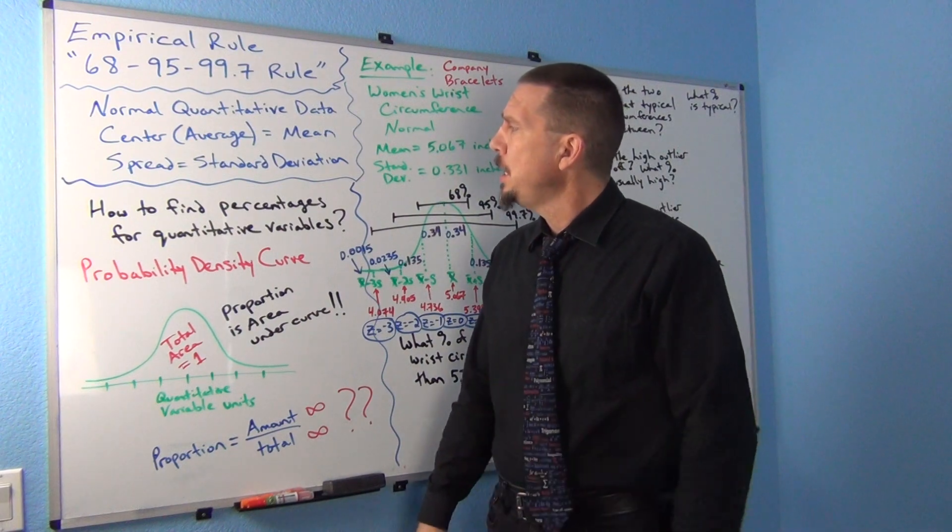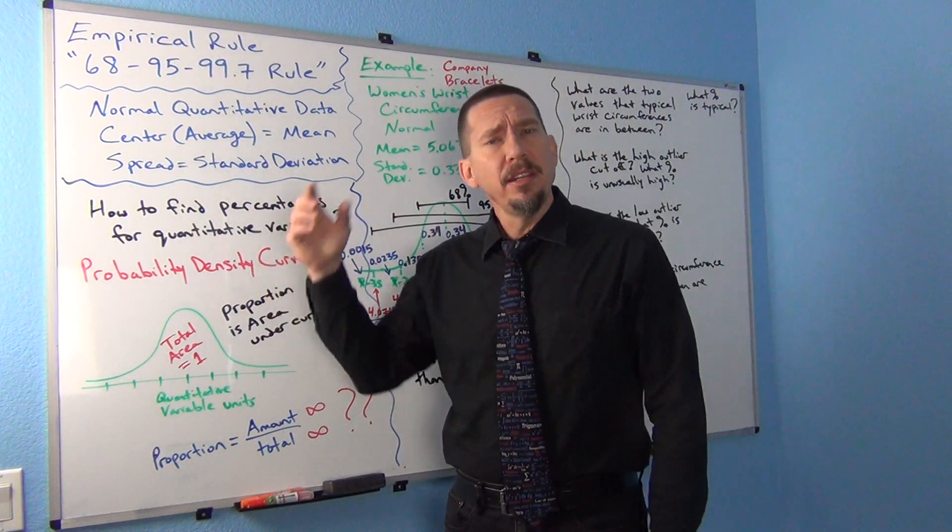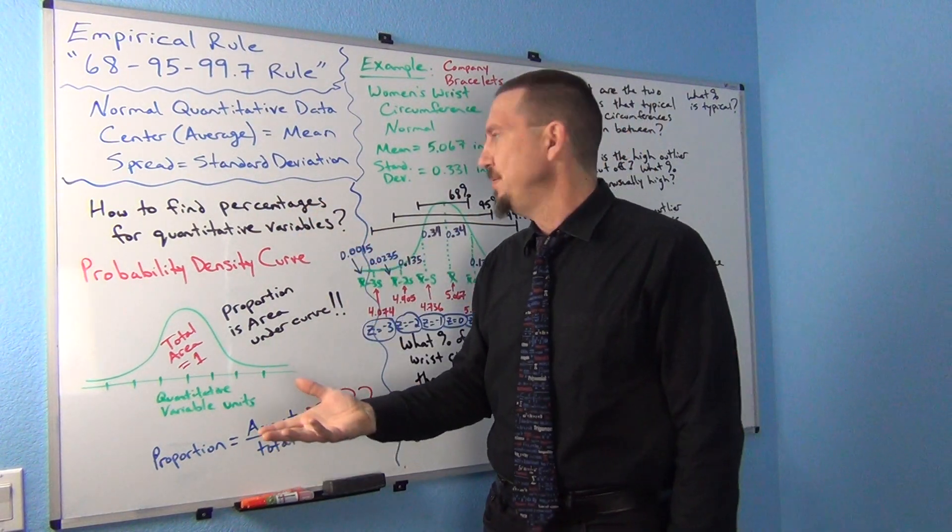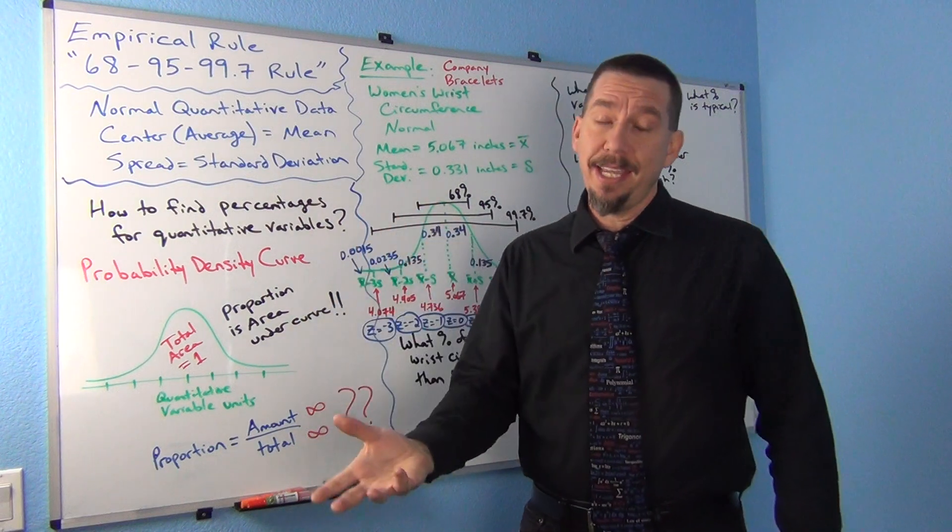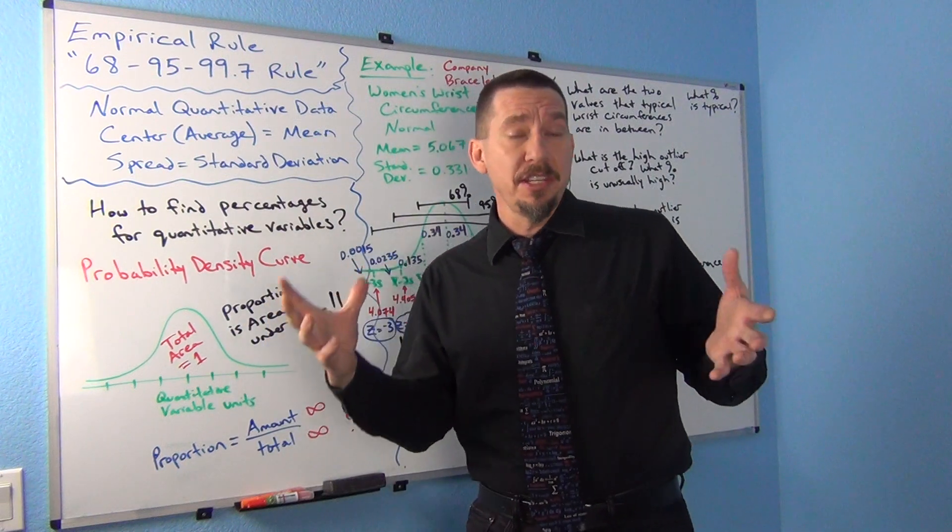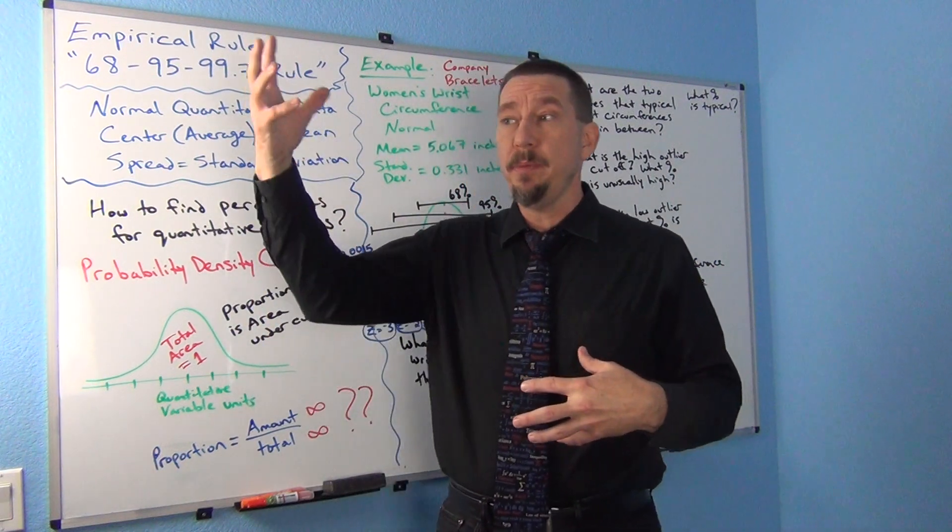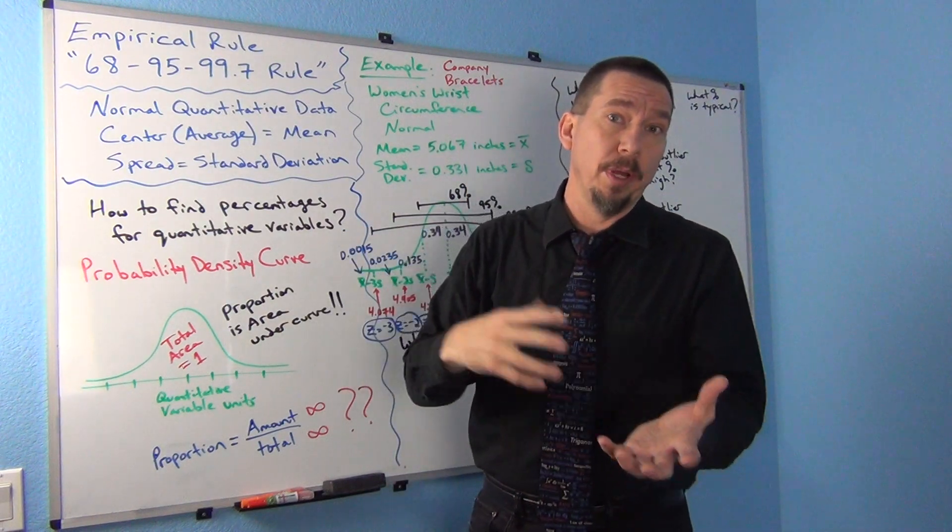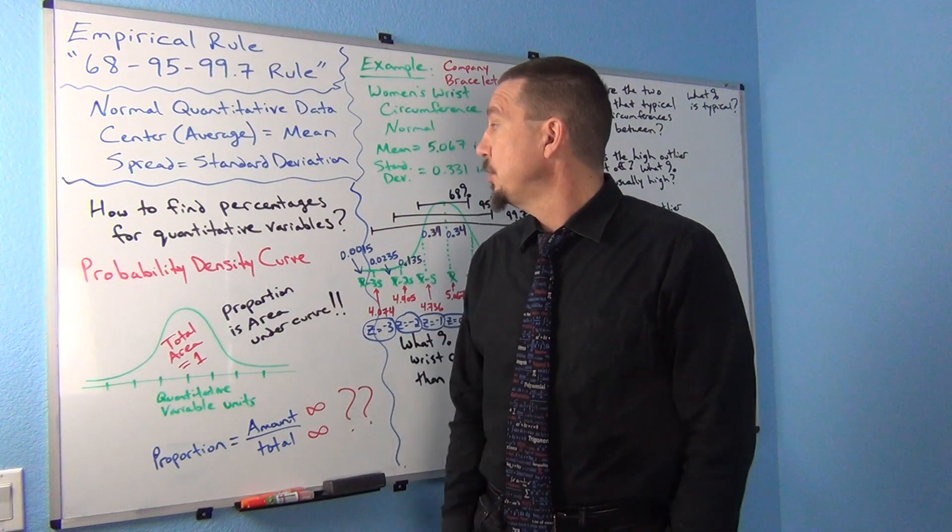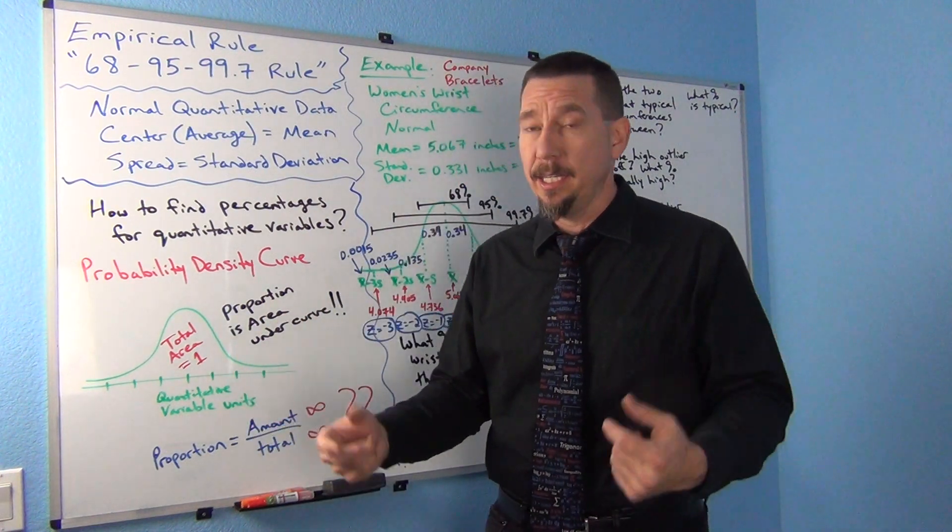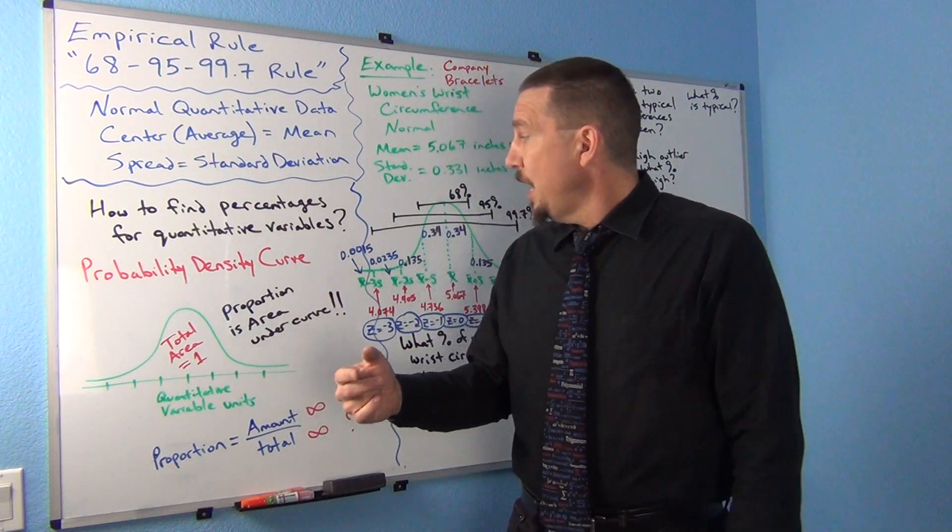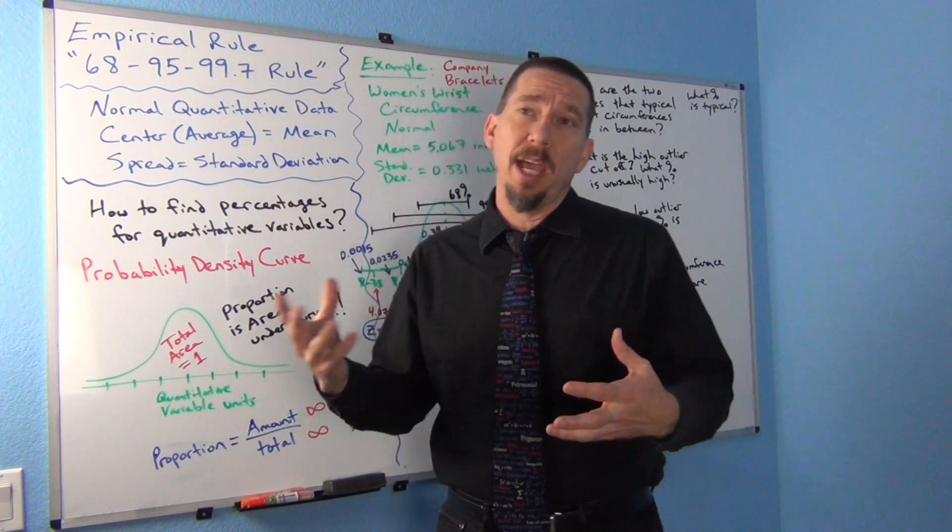So a question that kind of came up a long time ago was how do we find percentages for quantitative data, for quantitative variables. If you kind of think about it, categorical data, it's pretty simple, right? We kind of look at how many people have a certain characteristic out of the total. That's kind of how we calculated percentages for categorical data. But what happens if we're dealing with quantitative data?